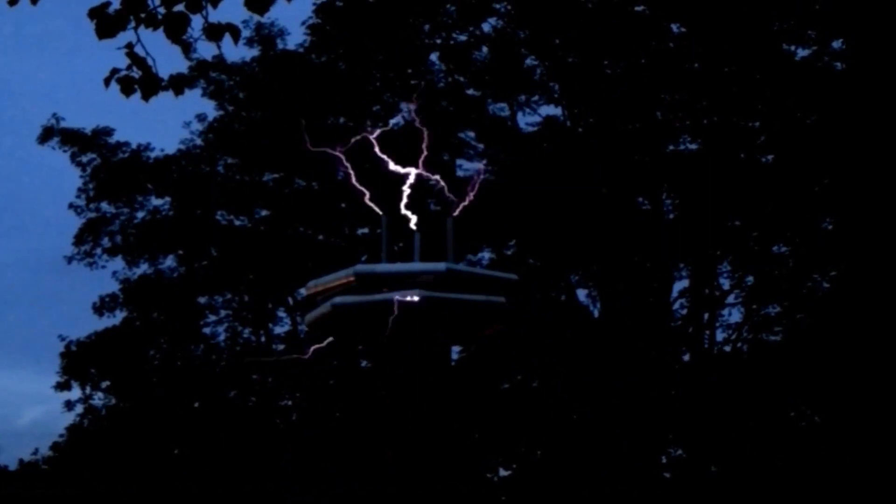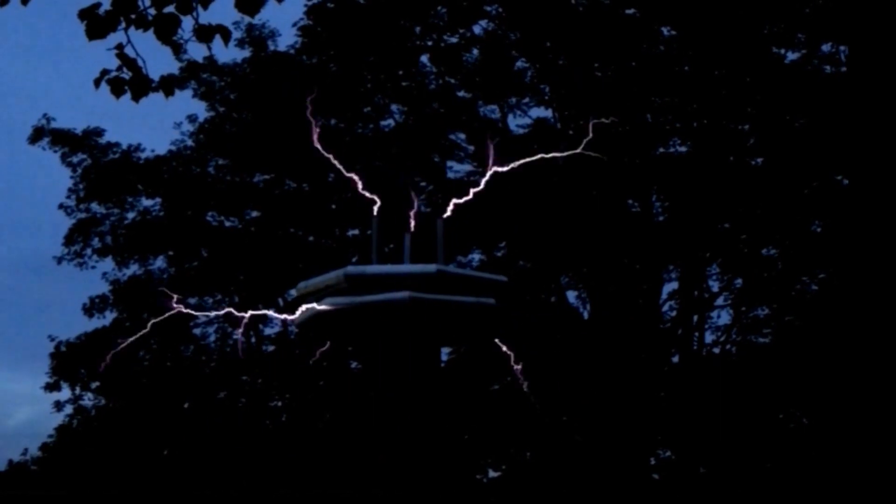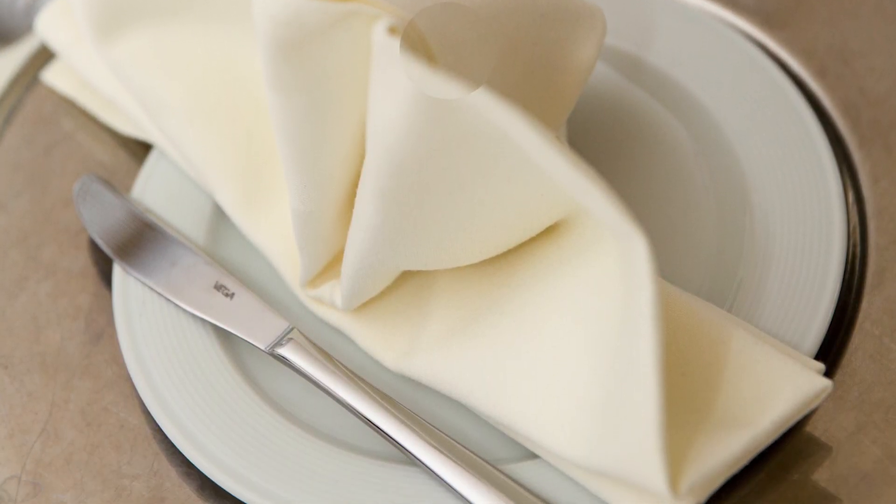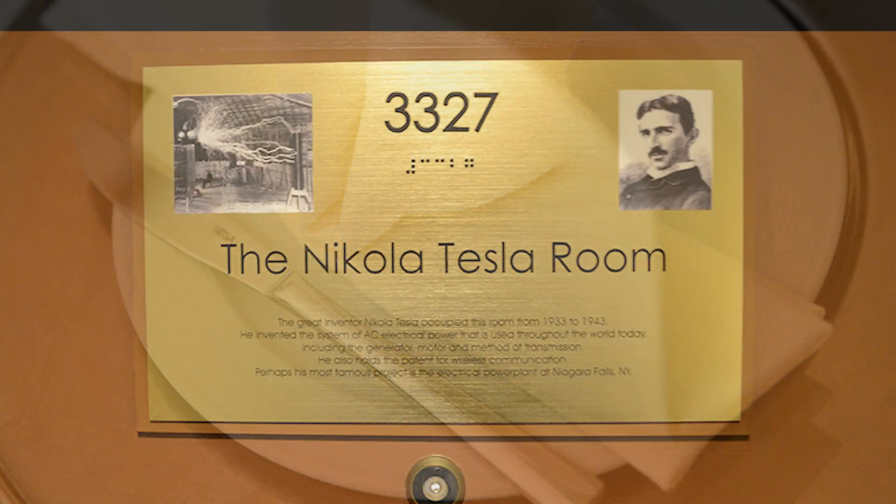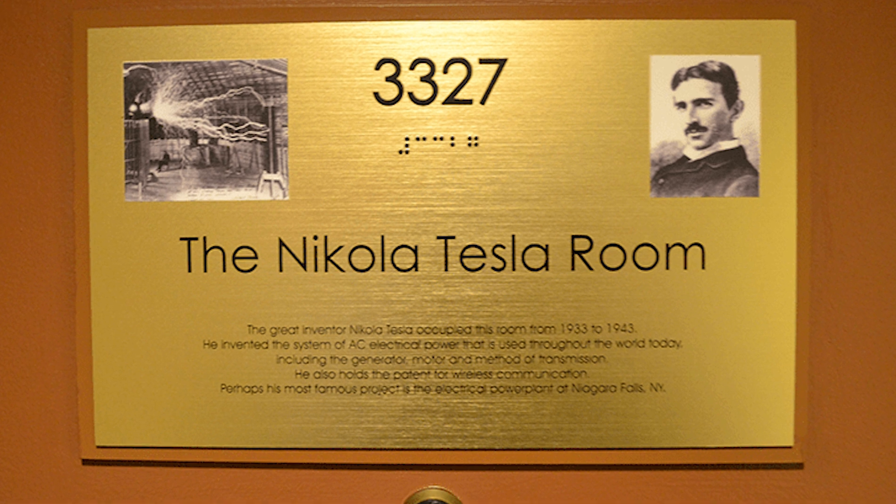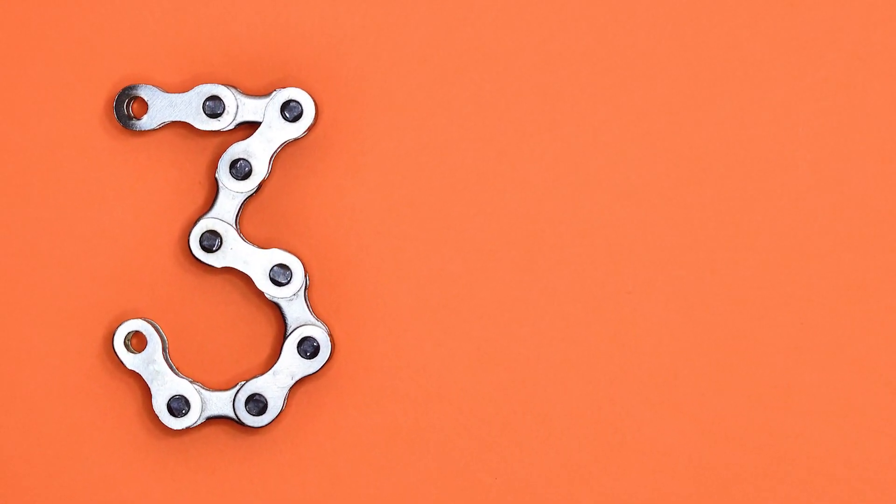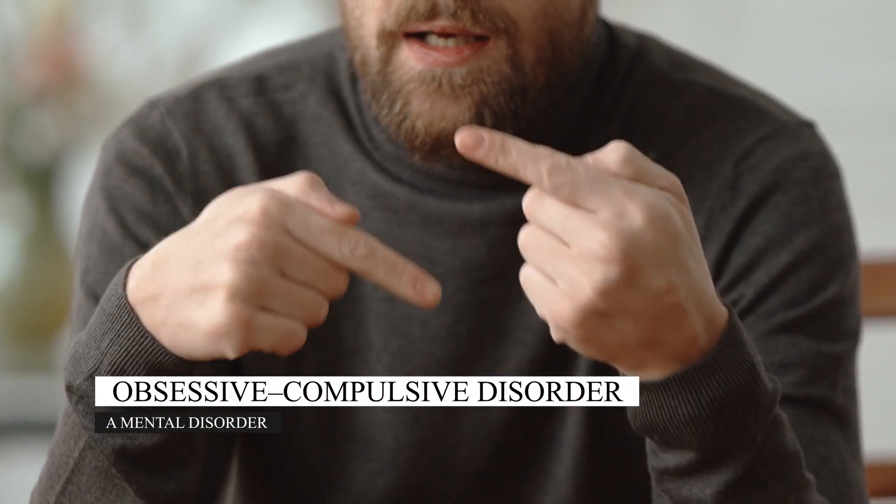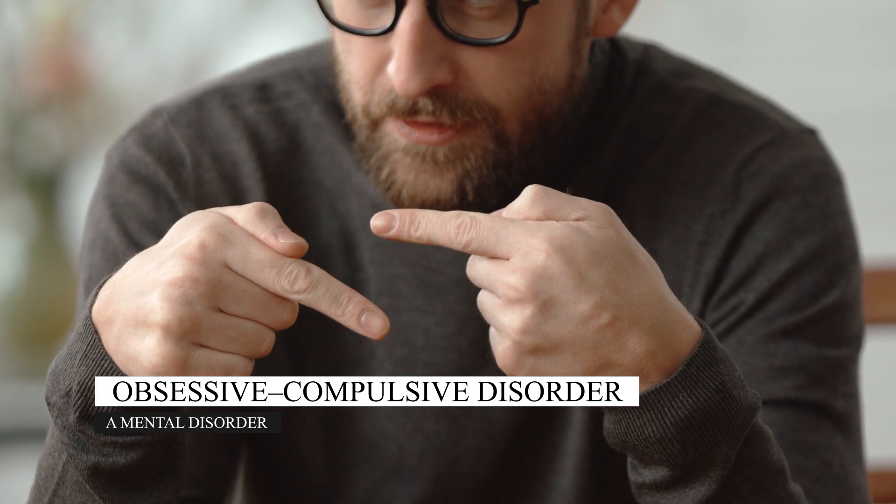He was walking around a block repeatedly three times before entering a building. He would clean his plate with 18 napkins. He lived in hotel rooms only with numbers divisible by three. He would make calculations about things in his immediate environment to make sure the result is divisible by three. Some say he had obsessive-compulsive disorder, a mental disorder in which a person feels the need to perform certain routines repeatedly.